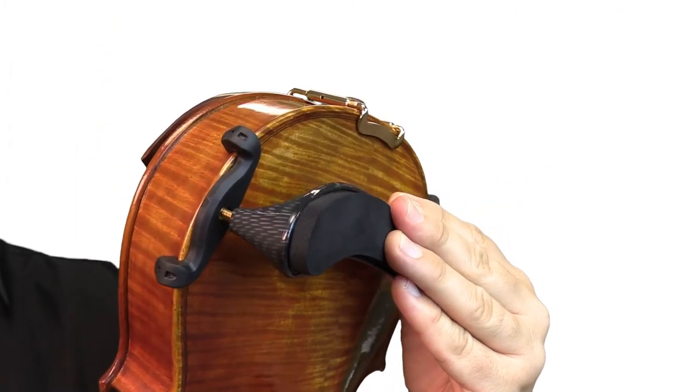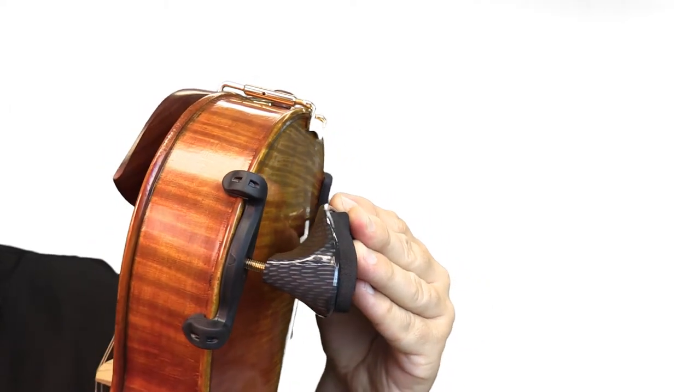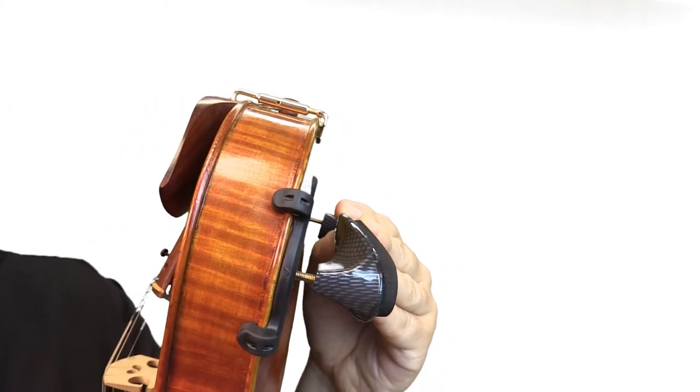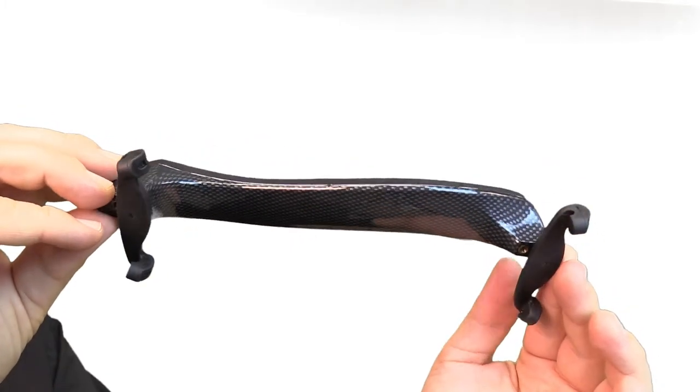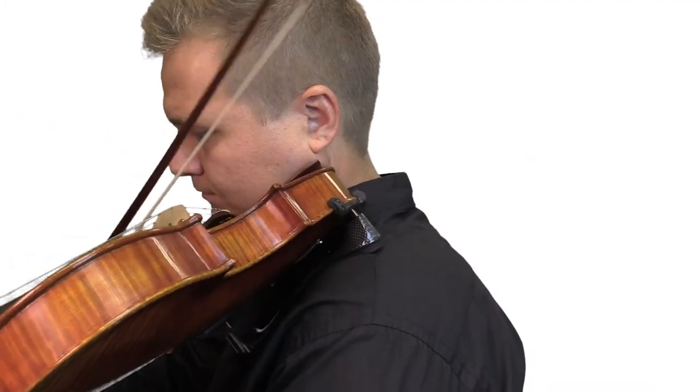The shoulder rest feet are made of a strong rubber that does a great job of staying secure without scratching your instrument. There's a generous amount of foam padding when it comes in contact with your body, and it provides some comfort and also prevents slipping.